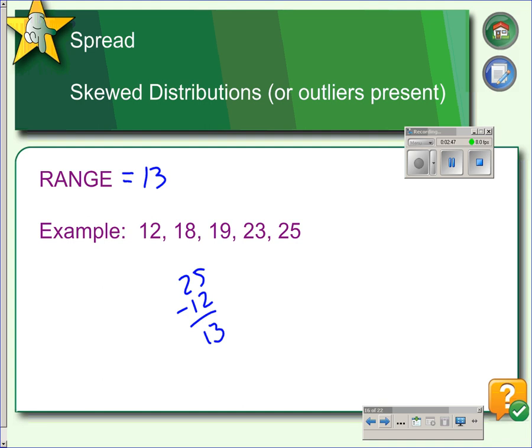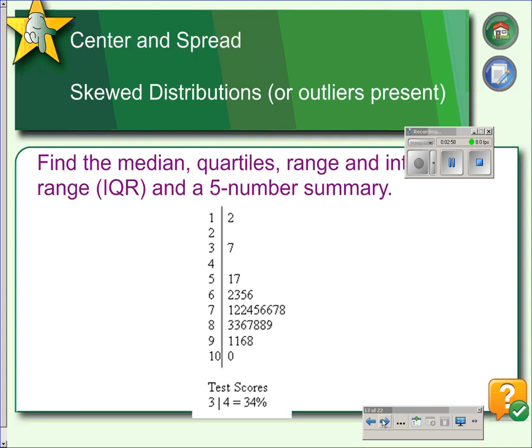The range, though, is not a resistant measure because if this 25 were a 250 instead, the range would become much larger. A better measure of spread is the interquartile range. The interquartile range measures the range of the middle half of the data instead of the entire data set, which means the outliers would then not have an effect on the IQR.